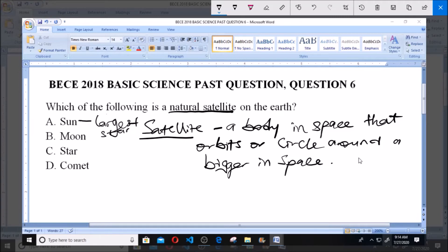Sun is a star but the largest. And so sun does not orbit or circle.